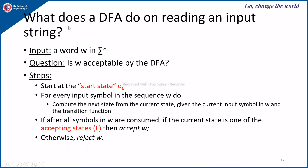What does a DFA do on reading an input string? The input is a word W in sigma star. To verify whether W is acceptable, you start at the start state Q0. For every input symbol in the sequence W, compute the next state from the current state using the transition function. After all symbols in W are consumed, if the current state is one of the accepting states, the string W is accepted; otherwise it is rejected.